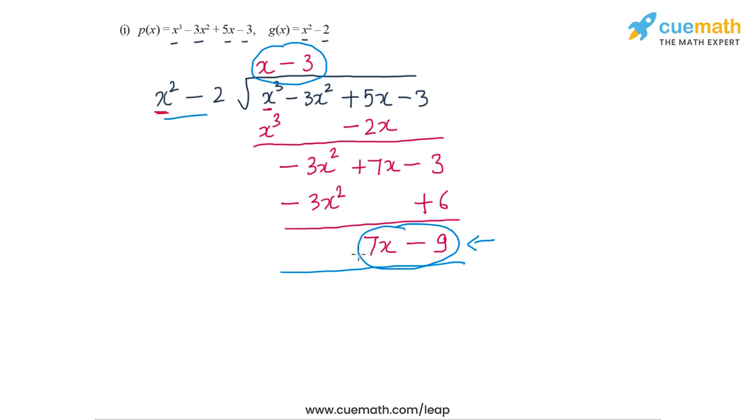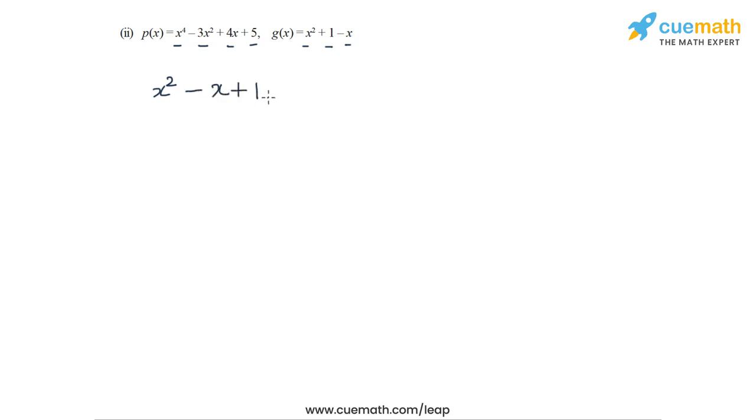That solves part one. In part two the dividend polynomial is x⁴ - 3x² + 4x + 5, so there is no cubic term. The divisor polynomial is x² + 1 - x, which we write in order as x² - x + 1. The dividend is x⁴ - 3x² + 4x + 5.